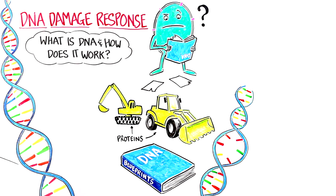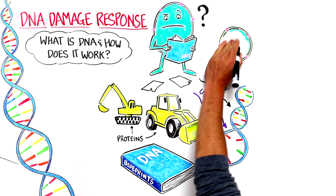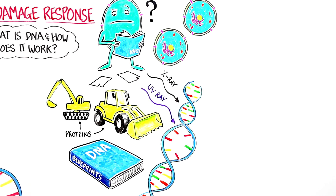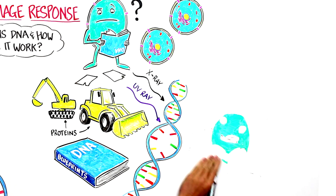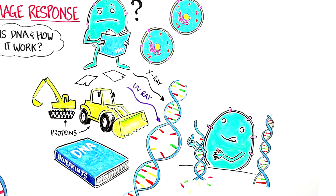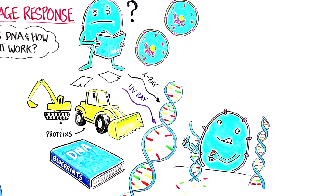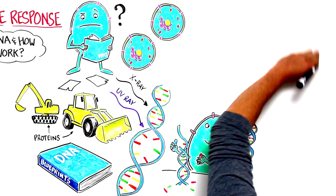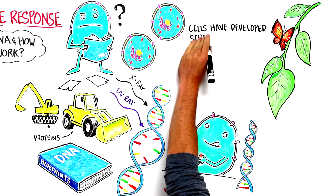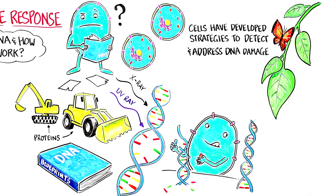DNA can be damaged by external factors like UV light and x-rays. Damage can also occur when cells duplicate themselves in a process called cell division. In cell division, the parent cell copies its DNA to make a new version for the new cell. But the copying isn't always perfect — it's kind of like tracing a picture. Even with an exact image to copy, the tracer can make mistakes, creating a damaged book of blueprints for the new cell. Luckily, cells have developed strategies to detect and address DNA damage, regardless of the source.